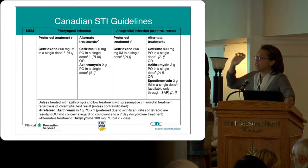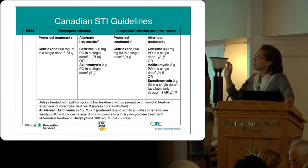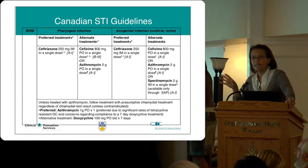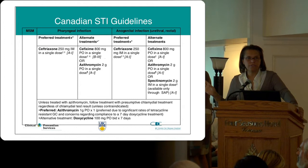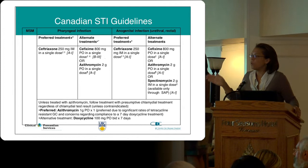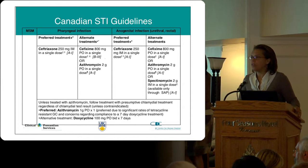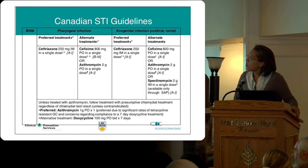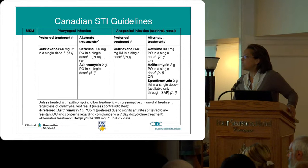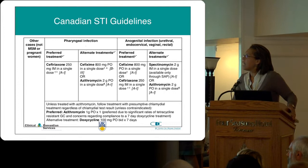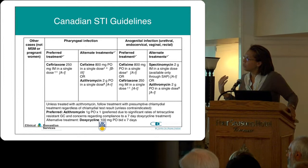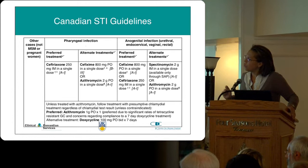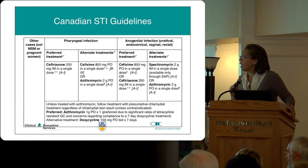So for MSM: dual treatment, doubled doses for pharyngeal, rectal, and urethral infection. Ceftriaxone is the preferred first-line treatment. But if clients don't want an IM injection, it's more important for them to get the oral medication — cefixime 800 mg PO — plus co-treatment with azithromycin. For pharyngeal infections regardless of sex, we still recommend ceftriaxone as first-line therapy with co-treatment. For other infections — urethral, endocervical, vaginal, rectal — in women or men who have sex with women, you can use either cefixime or ceftriaxone, always with co-treatment.